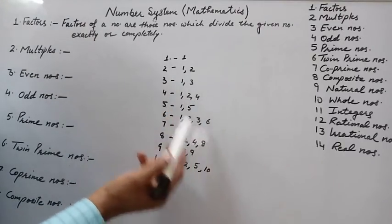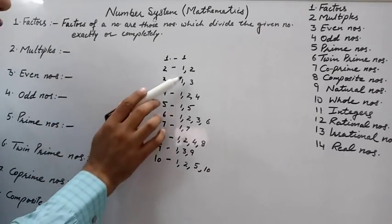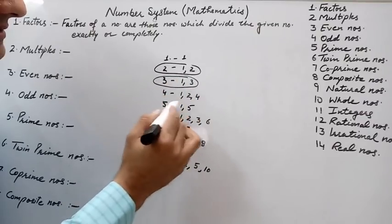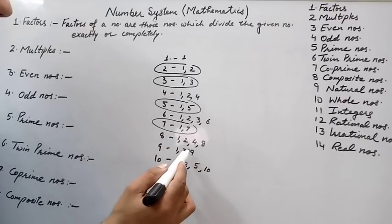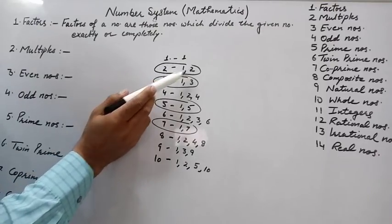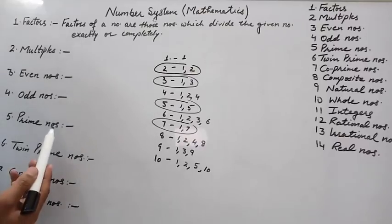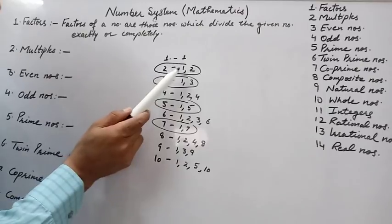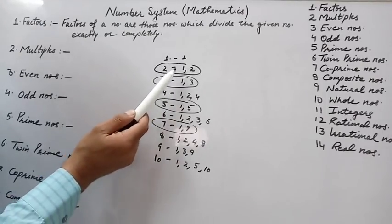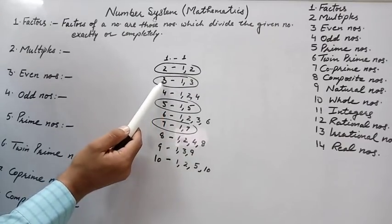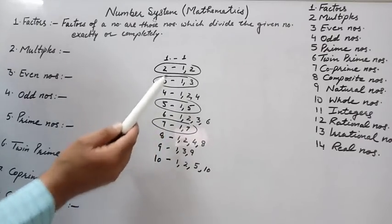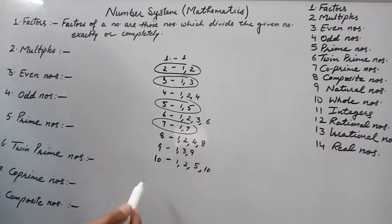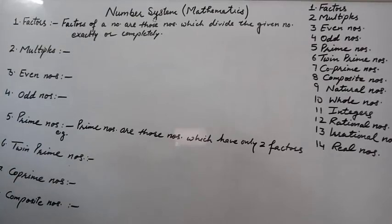Some numbers have only 2 factors and some have more than 2. The numbers which have only 2 factors are called prime numbers. Prime numbers are those numbers which have only 2 factors — one factor is 1 and the other is the number itself. For example, 2 has factors 1 and 2; 3 has factors 1 and 3; 5 has factors 1 and 5; 7 has factors 1 and 7.